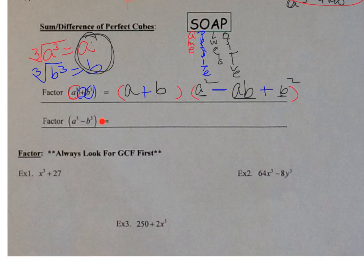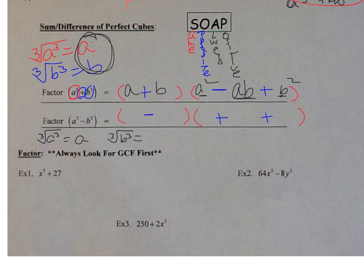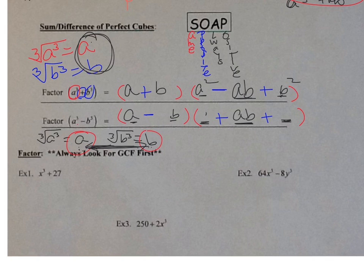For the difference of perfect cubes, a cubed minus b cubed, set up a small and big parenthesis. The first sign is the same as minus (negative), the next sign is opposite (positive), and the last sign is always positive. Cube root of a cubed is a, cube root of b cubed is b. In the small parentheses: a and b. In the large parentheses: a squared in the front, a times b in the middle, and b squared at the end.